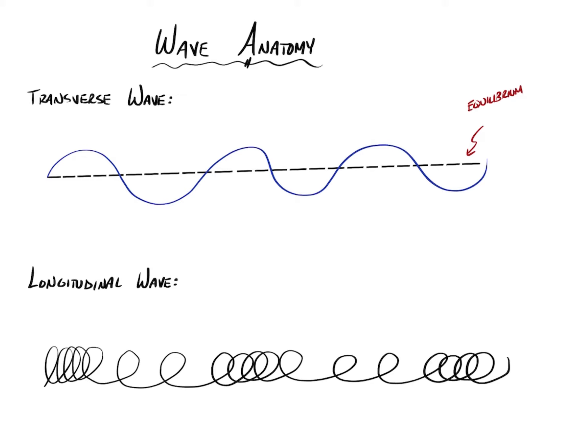So that dotted line in the middle is what we call equilibrium. So imagine the ocean. If there was no wind, it was a very calm day, you wouldn't have waves. You would just have a flat lake or a flat ocean. So equilibrium is if the waves weren't present, where would this water level be? What would this rope be doing if you weren't shaking it? Equilibrium is just essentially where all the molecules want to be if they weren't being disrupted by this wave energy.